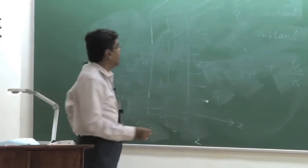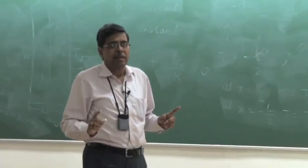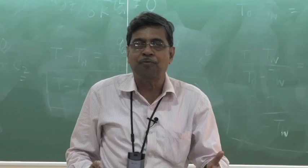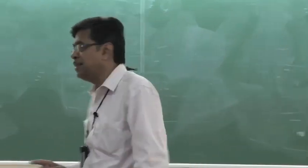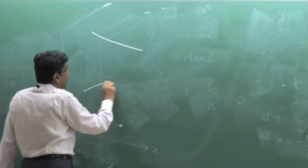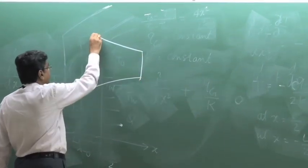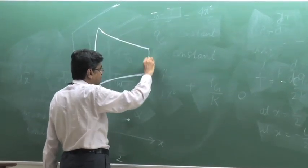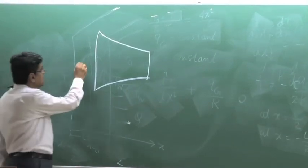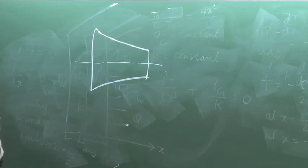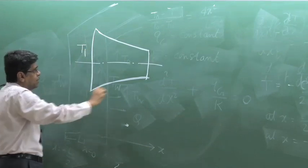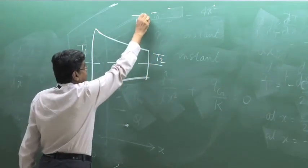Before going to the problem, I will discuss one thing: I told that one-dimensional steady state heat transfer truly happens when the area normal to the heat flux is not varying in the direction of heat flow. But sometimes by some approximation we use one-dimensional analysis for an area-varying substance. Let us consider a tapered rod where the boundary condition is such that one face is kept at temperature T1, the other face is T2, and T1 is greater than T2.